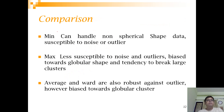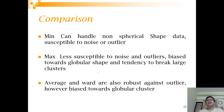Comparing the methods: single linkage (min) can handle non-spherical shape data, but is susceptible to noise and outliers. Complete linkage (max) is less susceptible to noise and outliers, but is biased toward globular/circular shaped clusters and has a tendency to break large clusters. Average and Ward's methods are also robust against outliers but are biased toward globular clusters.